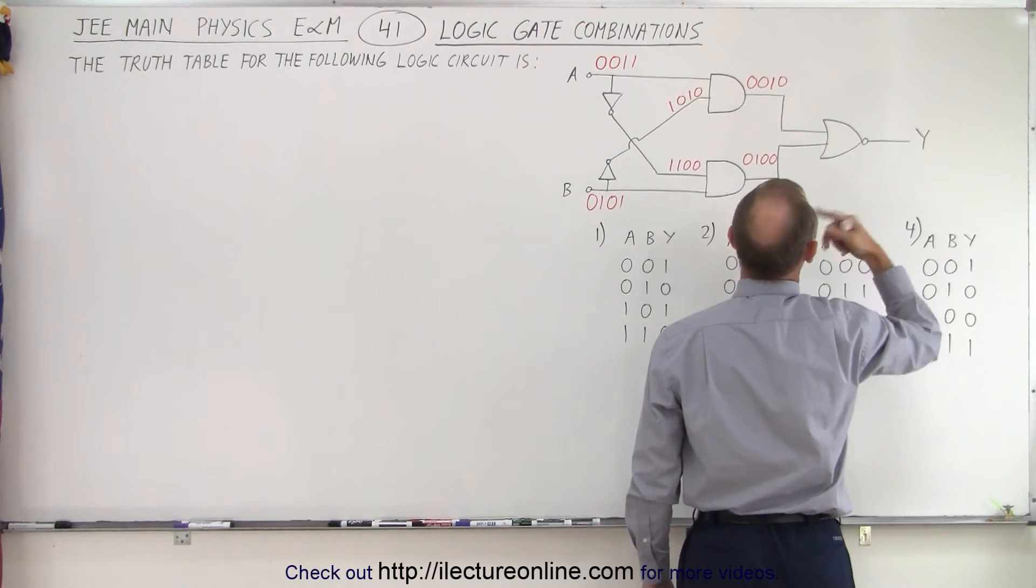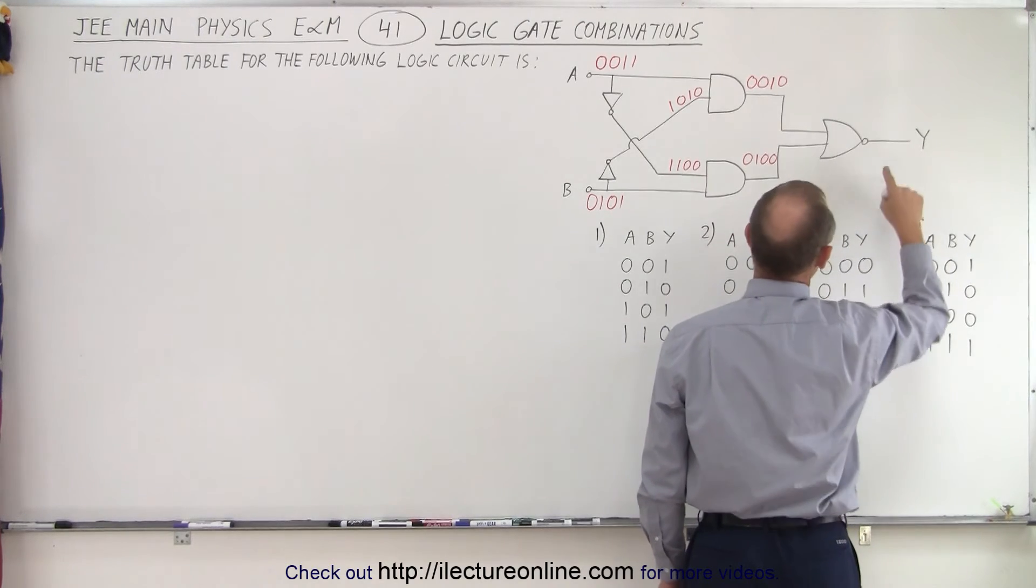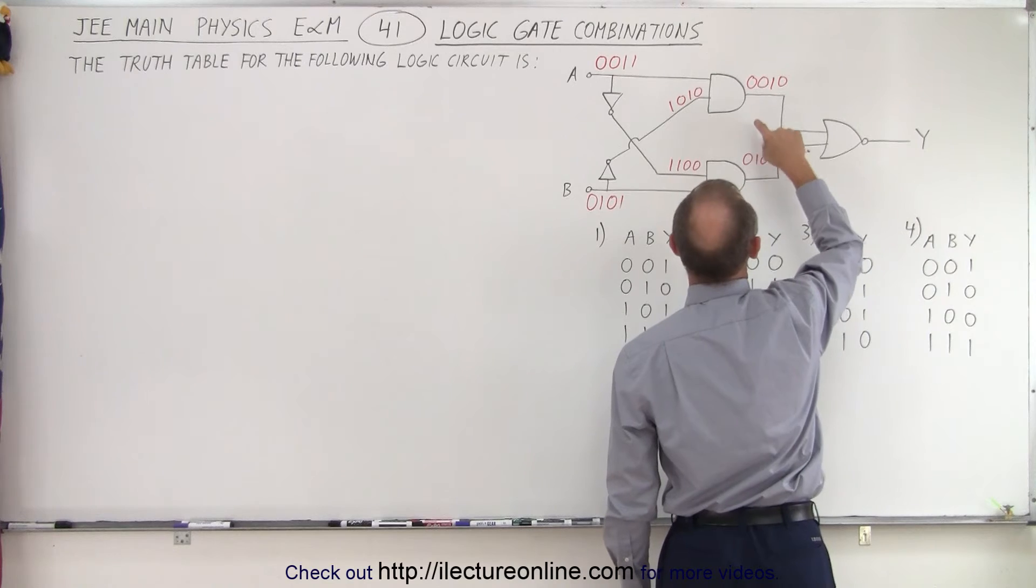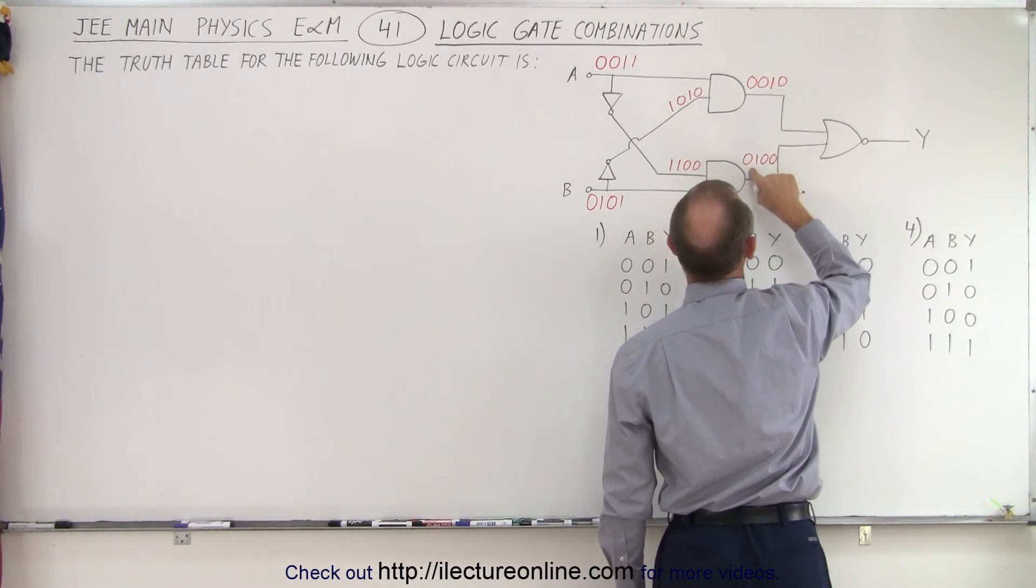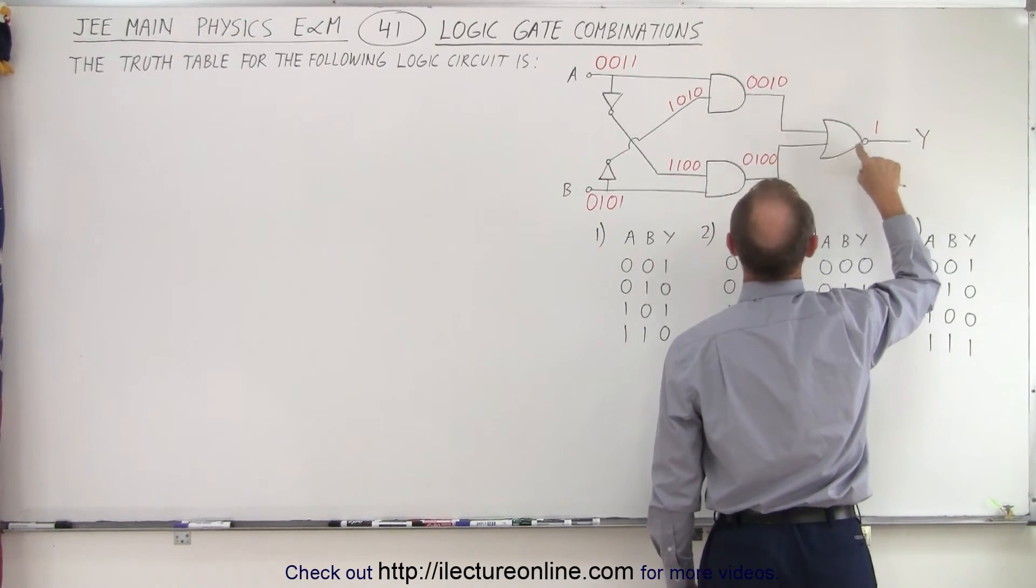But in an OR gate you get the opposite, you get nothing. So the only way to get a 1 here is if both are 0s. So 0 and 0 will give us a 1 here because it's a NOR gate.